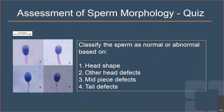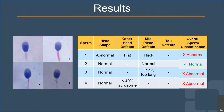A short quiz presents four images classified by head shape, head defects, midpiece defects, and tail defects, asking participants to classify each as normal or abnormal in 20 seconds. Reviewing the answers: looking at image number one, examining the head to determine classification.